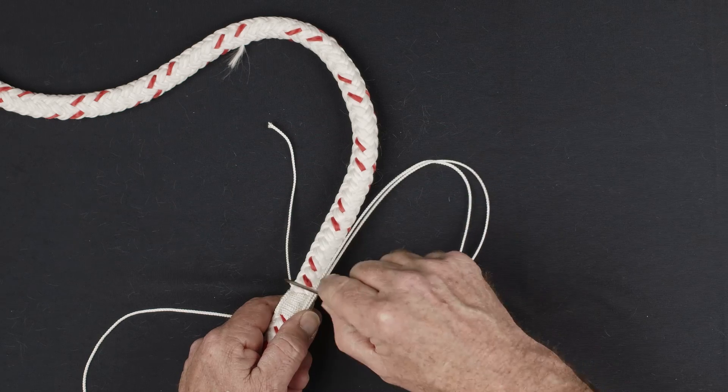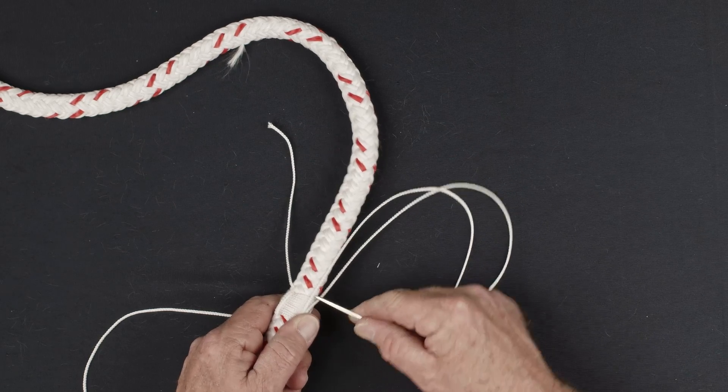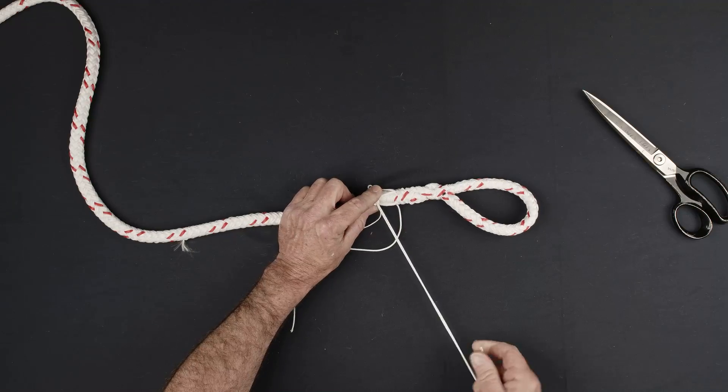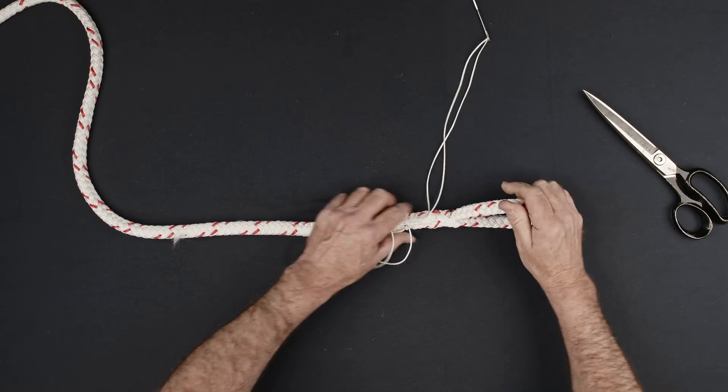Lay the final strand parallel to the rope and pass the needle through the bottom of the whipping at a 45 degree angle. The needle should exit adjacent to the location where the tail of the whipping exits the rope.